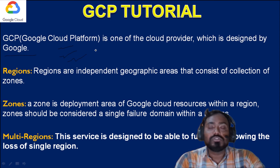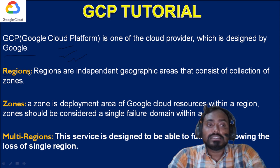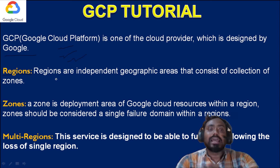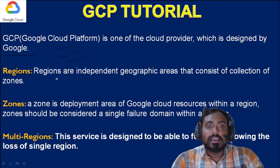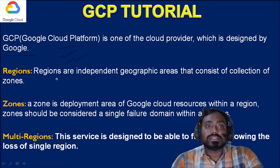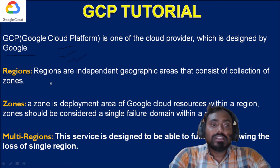Before starting with anything, we have to understand about regions inside GCP. A region is nothing but the actual data storage location where the data will be stored. Google has different locations across the globe where they store data — these are geographical areas. Google has a total of 29 regions over the globe.